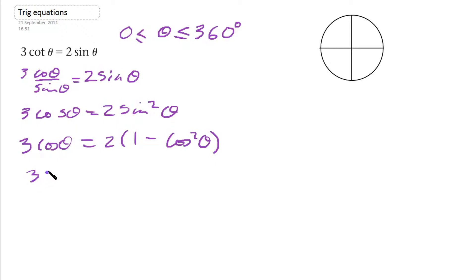So that gives us 3 cos theta equals 2 minus 2 cos squared theta. Now let's take it all onto the left-hand side. So let's take away 2 and add 2 cos squared theta.